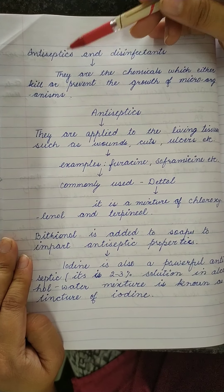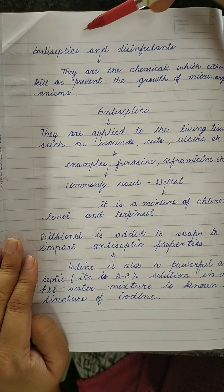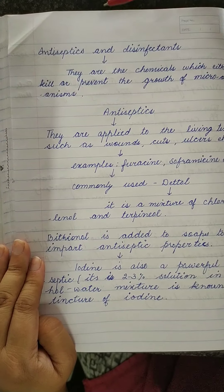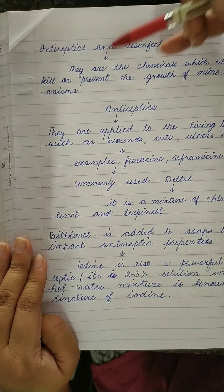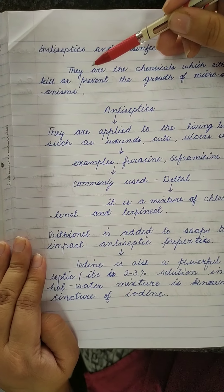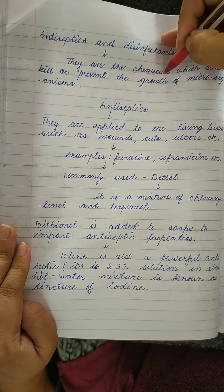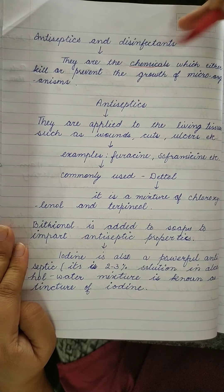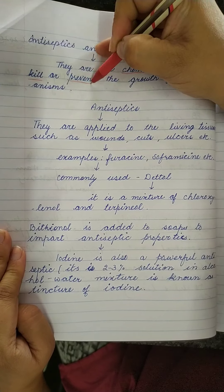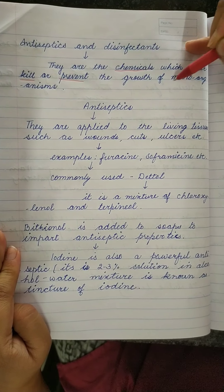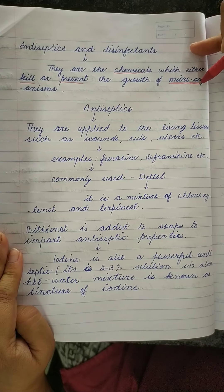Today we'll talk about antiseptics and disinfectants. First of all, they are the chemicals which either kill or prevent the growth of microorganisms — the organisms which cause diseases.